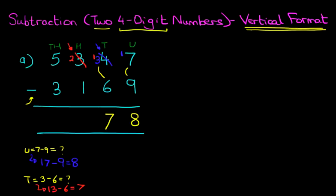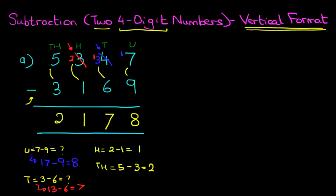Now we're going to do the hundreds column, which is 2 minus 1. Well, that's nice and easy. It is 1. And lastly, we've got the thousands column. We have 5 minus 3. The answer is 2. Therefore, 5,347 minus 3,169 is 2,178.